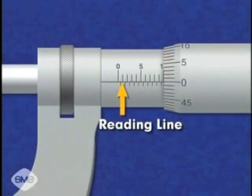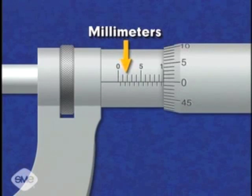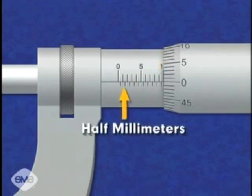The micrometer has a reading line on the sleeve. The vertical graduations on the top of the reading line each represent a single millimeter. The vertical graduations below the reading line indicate half millimeters.